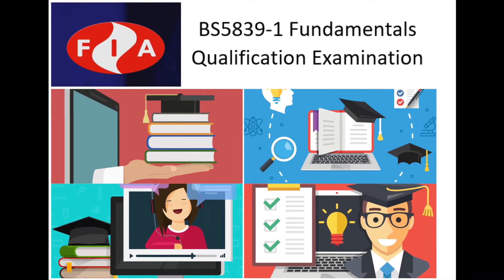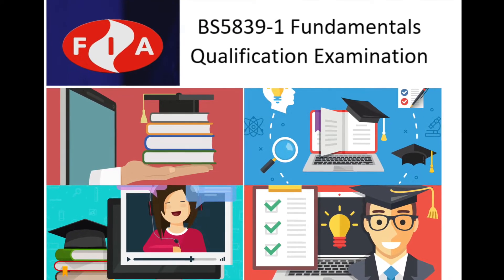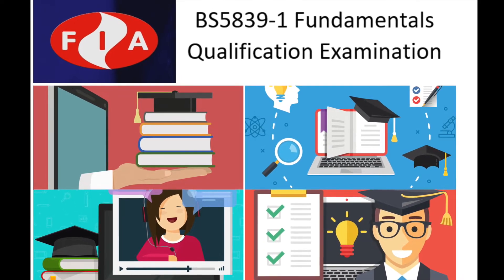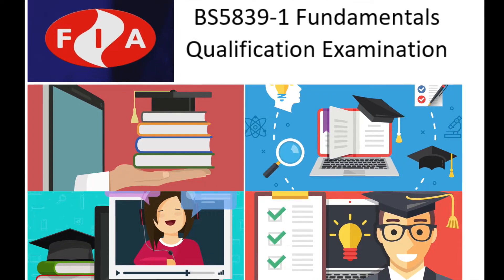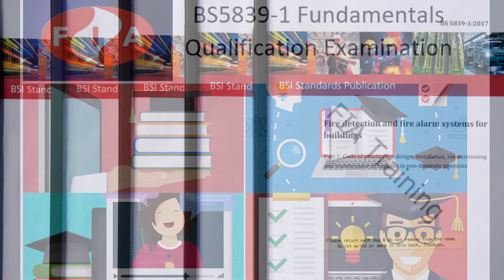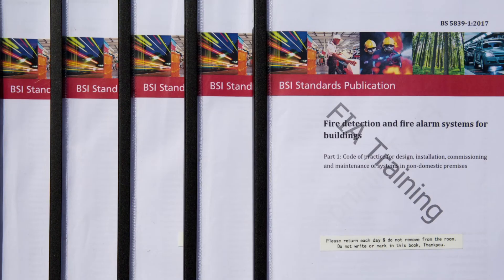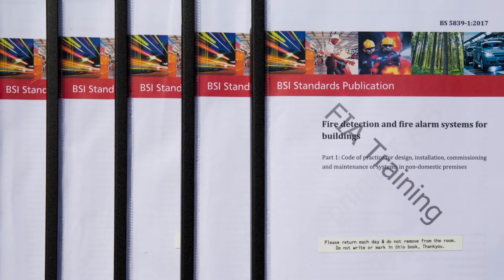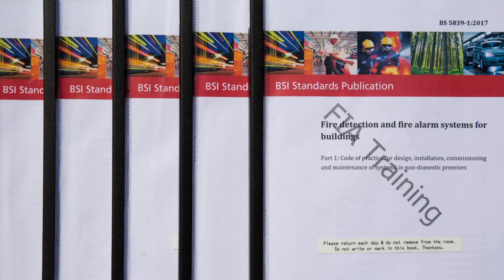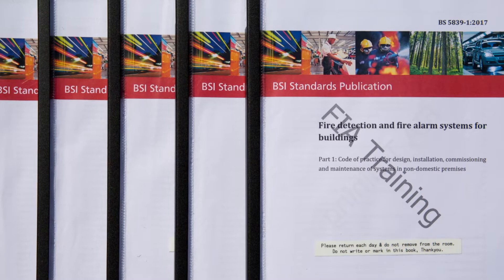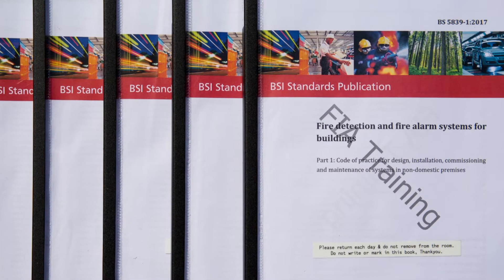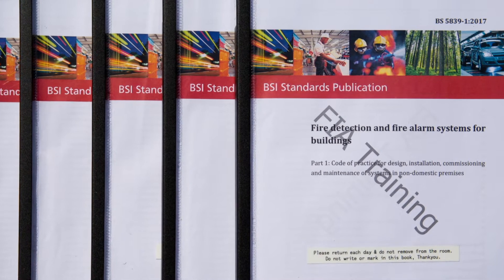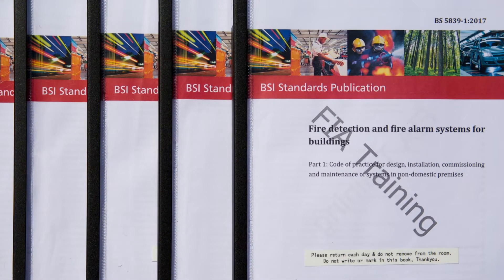Hello and welcome. This short video has been produced to help you prepare for the Fundamentals Unit 1 and Unit 2 test on fire detection and alarm systems. In order to take the examination, you will be provided with a copy of the British Standard BS 5839 Part 1, Code of Practice for Design, Installation, Commissioning and Maintenance of Systems in Non-Domestic Premises. When you have completed the examination, please leave the copy that has been issued to you on the desk before you leave, and please do not write or mark on or in the copy.